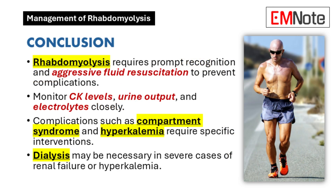Conclusion. Rhabdomyolysis is a potentially serious condition that requires prompt recognition and management to prevent complications such as acute kidney injury and electrolyte imbalances. Early and aggressive fluid resuscitation is the cornerstone of treatment, with careful monitoring of urine output and electrolyte levels. While the use of mannitol and bicarbonate remains controversial, they may be considered in select cases. Complications such as compartment syndrome and hyperkalemia require specific interventions, and dialysis may be necessary in severe cases.